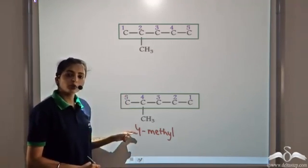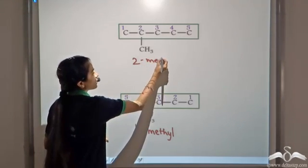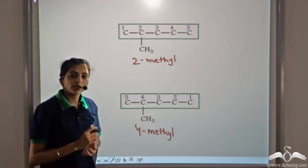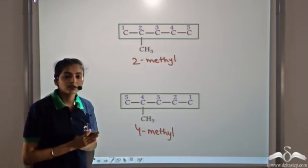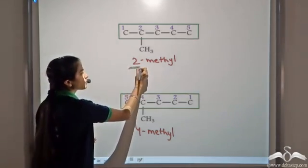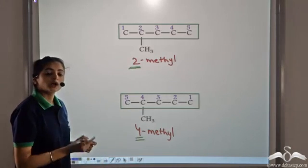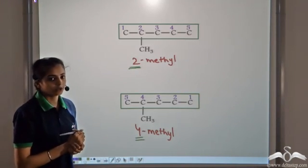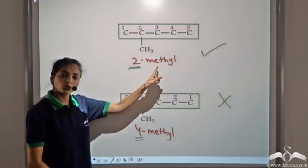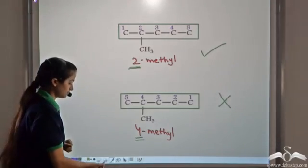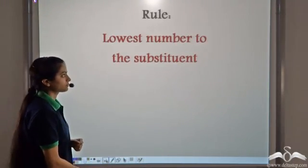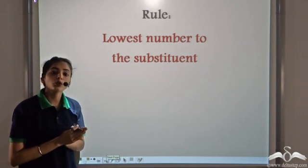For the same organic compound, we cannot have two different prefixes. The rule given by IUPAC states we have to use the lowest number for the substituent. In one case the substituent gets number 2, and in the other it gets number 4. So according to IUPAC, the lowest number should be given — the correct prefix is 2-methyl, meaning the numbering should start from the left.